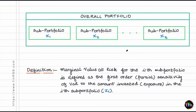A sub-portfolio can be as granular as an individual transaction or an individual trade that your traders have done. For each of these sub-portfolios, what is available to us is the dollar amount invested for that particular sub-portfolio. We'll call that dollar amount invested the exposure, and denote it as X_i, where i is the ith sub-portfolio.